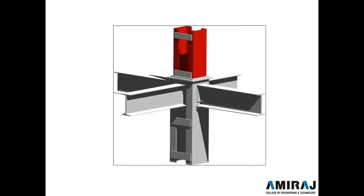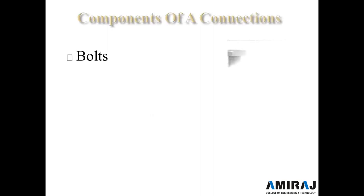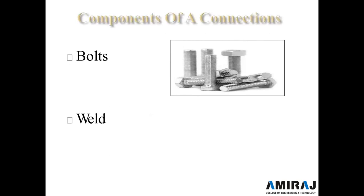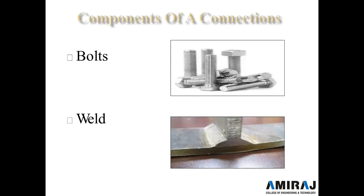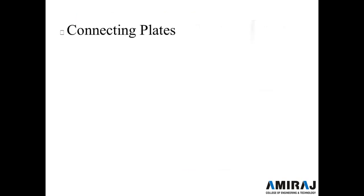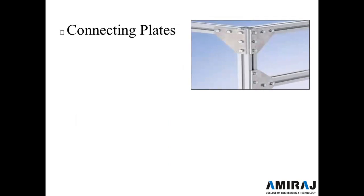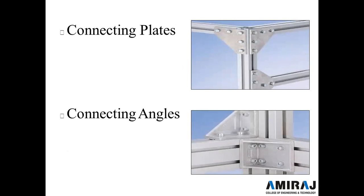In this figure, it is shown that a column is connected with a beam, connected by either a rivet joint, bolt joint, weld, or another barrier connection. The components of a connection are: first, bolts as shown in figure; second, welds as also shown in figure. Next is connecting plates — two plates connected by these bolt connections. Next is connecting angles — L-shaped members connected by bolt connections as shown in figure.